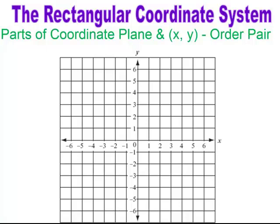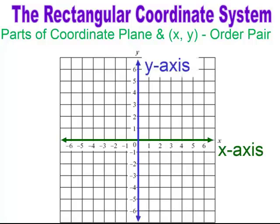Rectangular coordinate system: parts of the coordinate plane and ordered pairs. An ordered pair is an X and a Y. The horizontal axis is known as the X-axis, and the vertical axis is known as the Y-axis. Where the two lines cross or intersect is a point, and that point is known as our origin. The coordinate plane is broken down into quadrants.